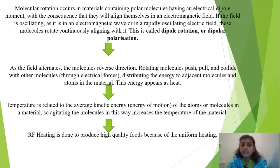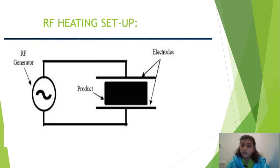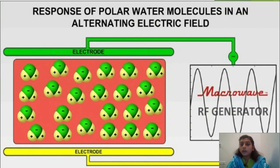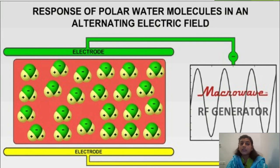RF heating is done to produce high quality foods because of the uniformity. In the setup image you can see the RF generator with the product kept between the electrodes. The AC current is displaced from the generator to the product through the capacitor. This shows the response of polar water molecules in an alternating electric field — the water molecules inside align themselves in the electromagnetic field.